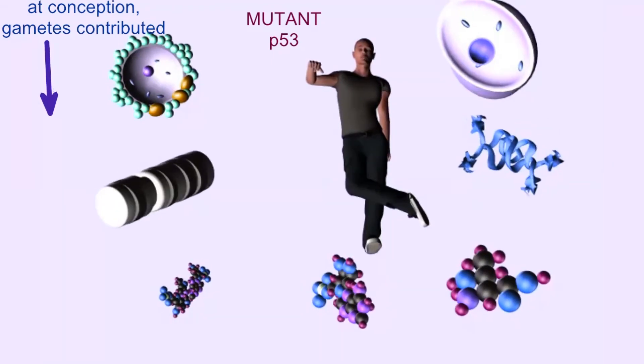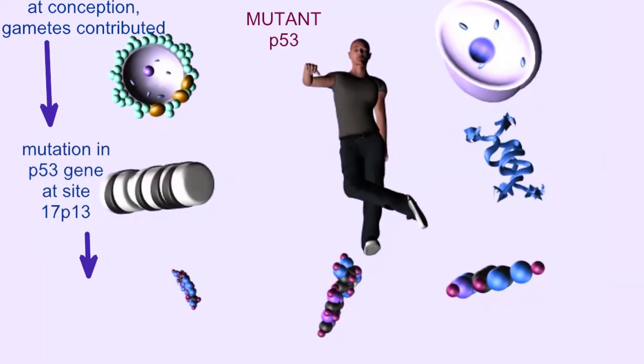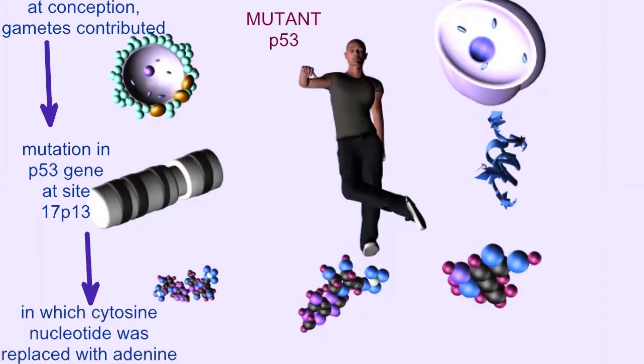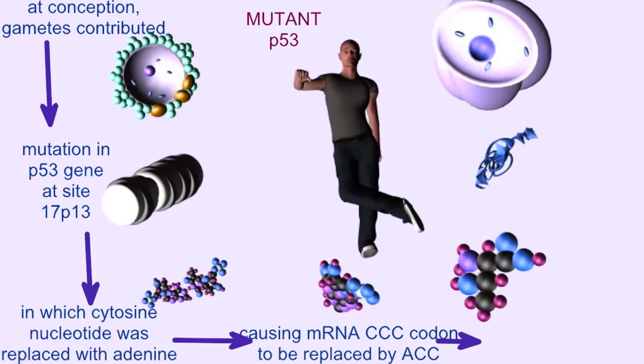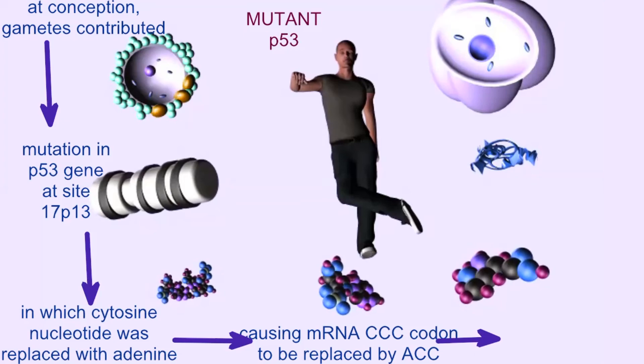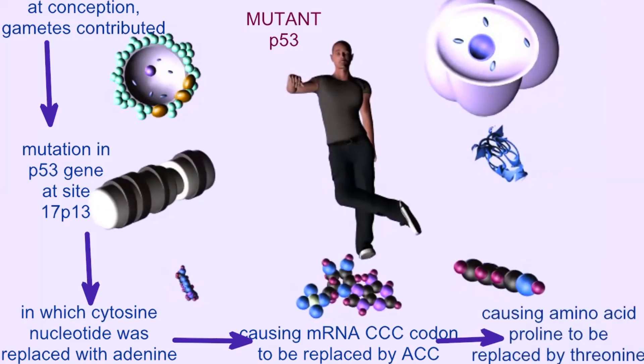The P53 protein is one of the most important proteins in regulating the cell cycle and preventing cancer. Because of my nucleotide change, which led to an amino acid change in the protein,